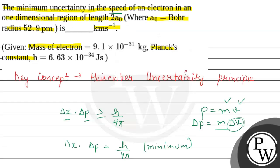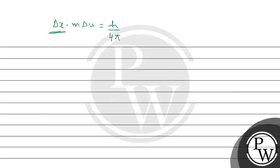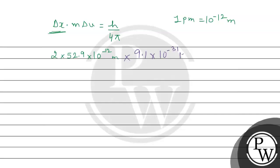In the given statement, the length is given as 2a0, which means the change in position delta x equals 2a0. The value of a0 is 52.9 picometers, and 1 picometer equals 10 to the power minus 12 meters. So we substitute: 2 × 52.9 × 10⁻¹² meters, multiplied by the mass of the electron 9.1 × 10⁻³¹ kg, multiplied by delta v, equals 6.63 × 10⁻³⁴ divided by 4π, where π is 3.14.